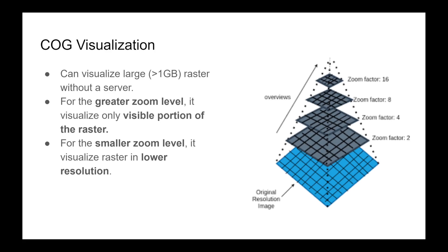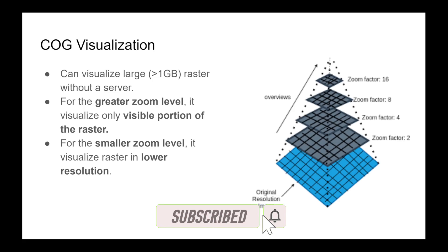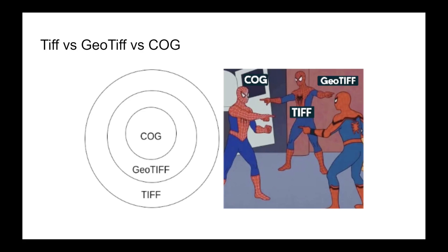COG can also visualize larger rasters without needing a server. For a greater zoom level it visualizes only the visible portion of the raster; if the zoom level is small then it visualizes the raster in lower resolution. This is called an image pyramid — based on the zoom level and area of interest it tries to reduce the amount of data required to visualize that raster.